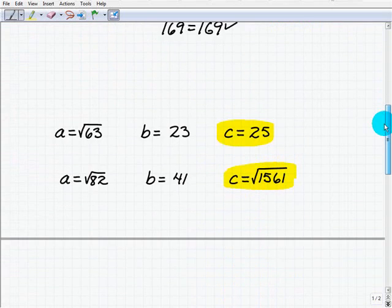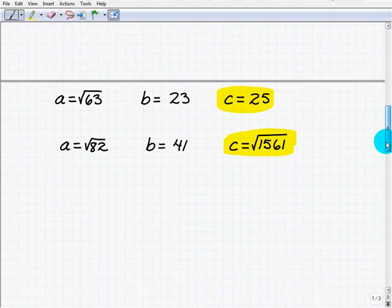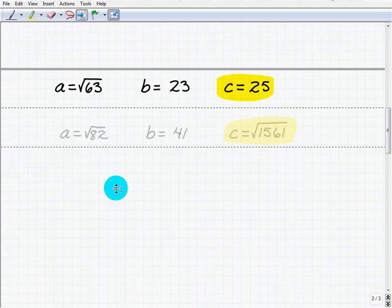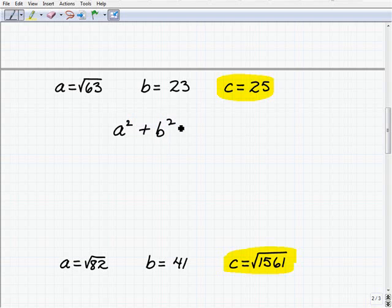So let's go ahead and take a look at the next two set of problems. Okay. Give myself some room here. All right, so a squared plus b squared, we're going to do the same thing here, equals c squared.